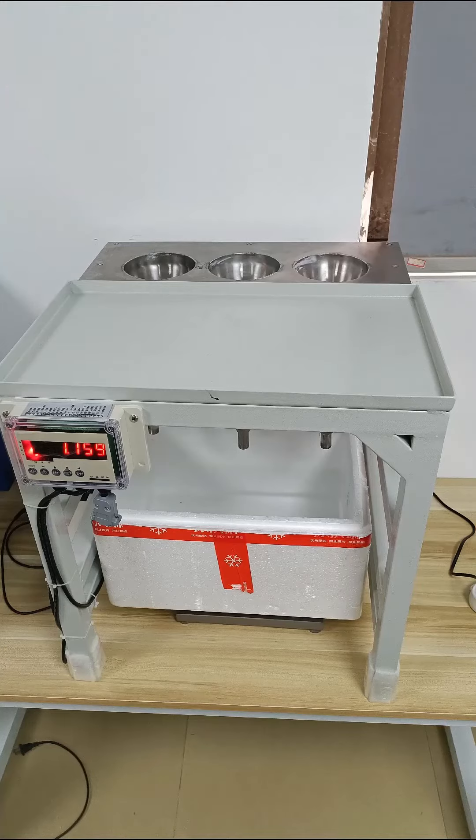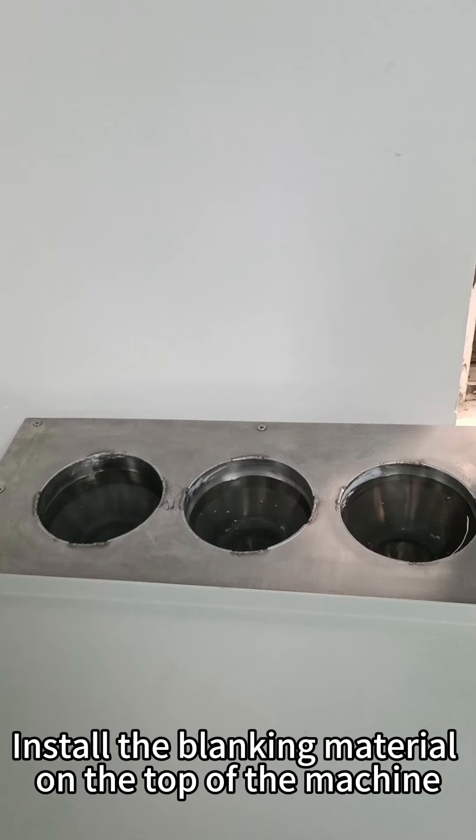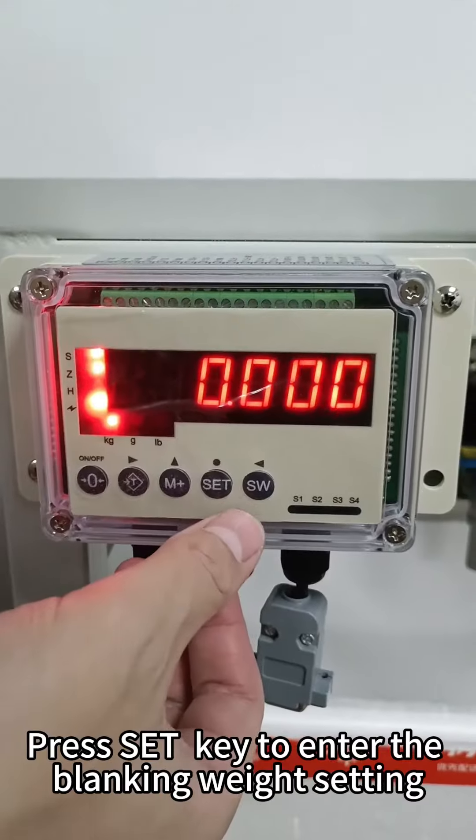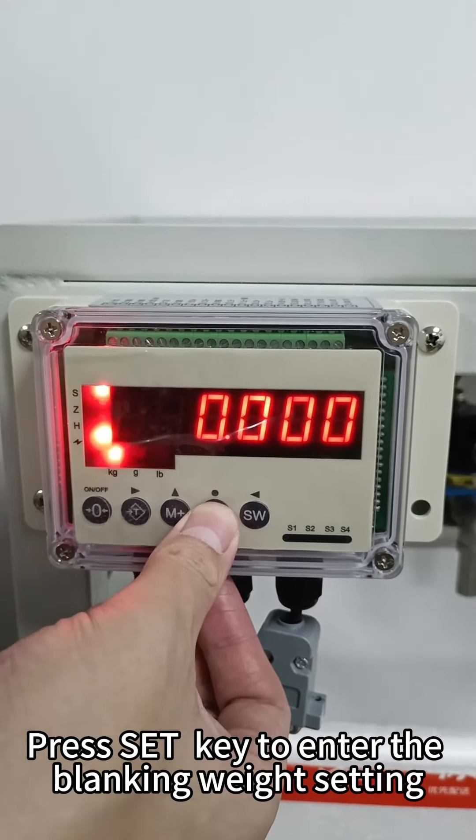Blanking Equipment Application. Install the blanking material on the top of the machine. Press SET key to enter the blanking weight setting.